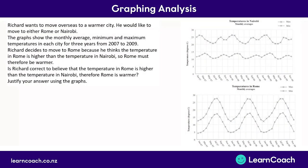Now let's look at an old NCEA question. Richard wants to move overseas to a warmer city — either Rome or Nairobi. Two graphs show the monthly average, minimum, and maximum temperatures in both cities between 2007 and 2009. Richard decides he wants to move to Rome because he thinks the temperature in Rome is higher than in Nairobi, and therefore Rome must be warmer. Is Richard correct to believe the temperature in Rome is higher, and is Rome actually warmer? We need to justify our answer using these graphs.